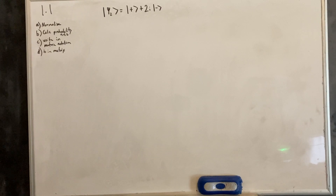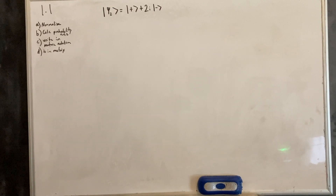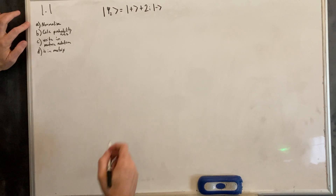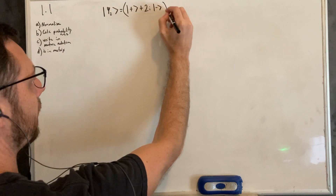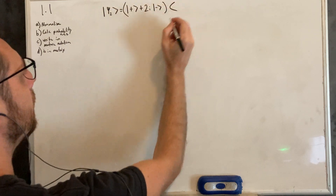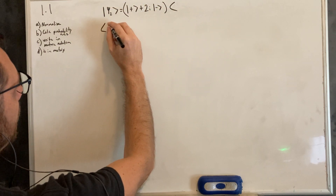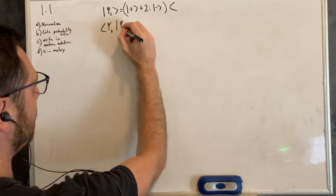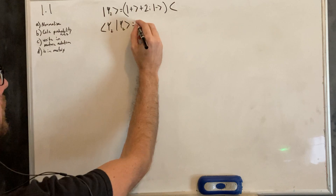So here's the second state. This one's pretty simple also. The third one's a little bit trickier, but let's go through this one. First we're going to normalize this, so we're going to have our normalization constant. We're going to have the inner product with itself, which should equal one.